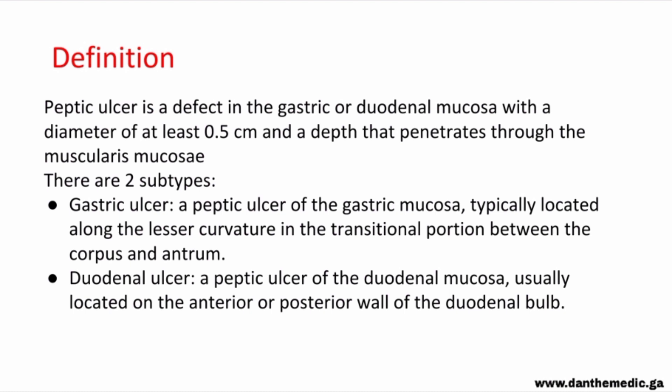There are two subtypes of peptic ulcer. We have gastric ulcer, which affects the gastric mucosa and is mostly located in the lesser curvature in the transitional portion between the body and the antrum of the stomach. We also have duodenal ulcer, which affects the duodenal mucosa and is usually located in the anterior or posterior wall of the duodenal bulb.